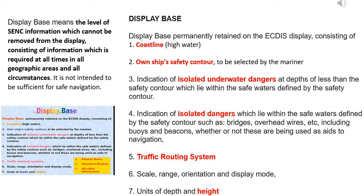4. Indication of isolated dangers which lie within the safe waters defined by the Safety Contour, such as bridges, overhead wires, etc., including buoys and beacons, whether or not these are being used as aids to navigation. 5. Traffic Routing System. 6. Scale, Range, Orientation, and Display Mode. 7. Units of Depth and Height.